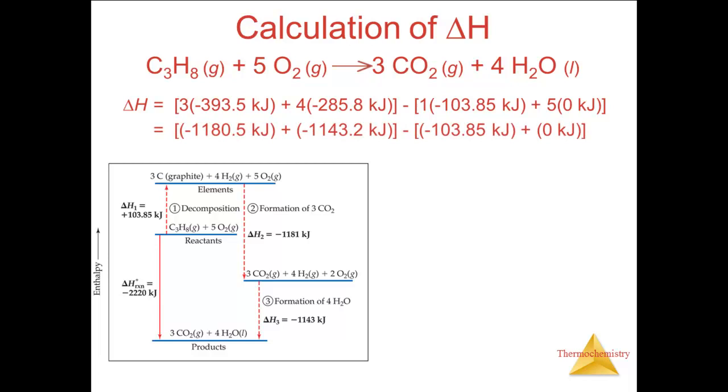Multiplying the terms out, while not paying close attention to sig figs, we get this equation, which simplifies to this, and gives us a value for delta H of minus 2,219.9 kilojoules.